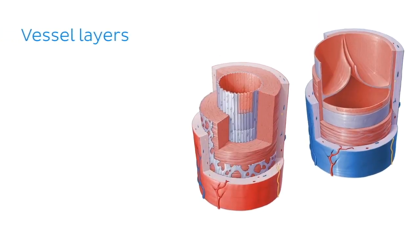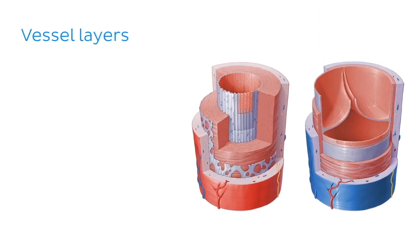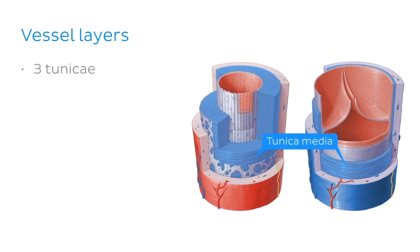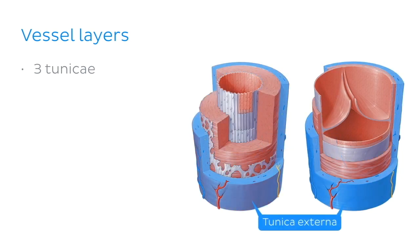Except for their smallest examples, all arteries and veins consist of three concentric layers called tunicae. From innermost to outermost, they are the tunica intima, the tunica media, and finally the tunica externa, which you can see in these illustrations.